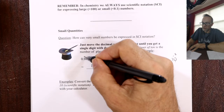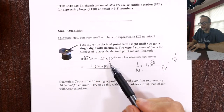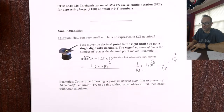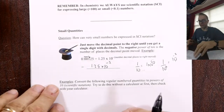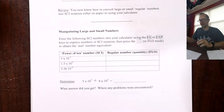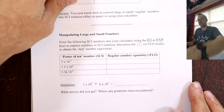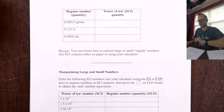For small numbers, you move the decimal to the right to get a single digit and it's a negative power. Thousandth — not thousand. A positive power is thousand, a negative power is thousandth. Convert these numbers using scientific notation — you can use the calculator or do it manually. I suggest doing it manually and then checking on the calculator.